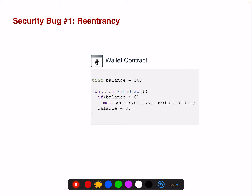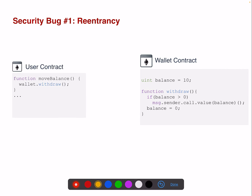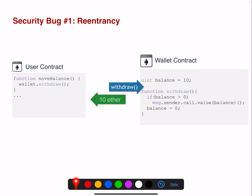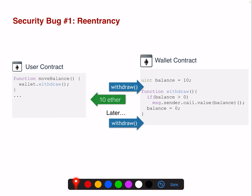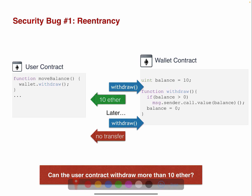Let's look at the first security bug. We've already understood a bit of Solidity, so let's look at this first security bug, which is called reentrancy. This is the same contract discussed at the beginning of the lecture. Let's say we have another user contract, and this user contract has a function move_balance. This function calls the withdraw function in the wallet contract. So we call into withdraw — we get 10 Ether in return, which is the balance. The balance is specified as what should be sent back to message.sender, which in this case is the user contract. Can a user contract withdraw more than 10 ETH?